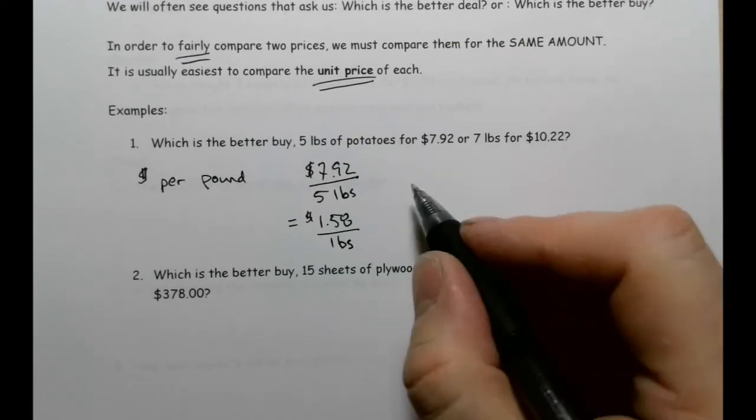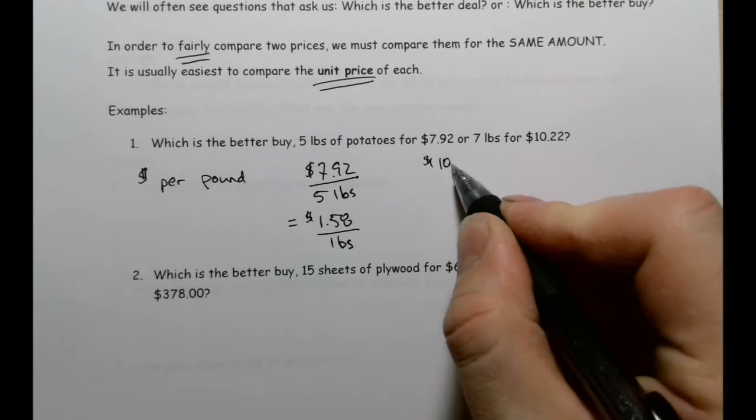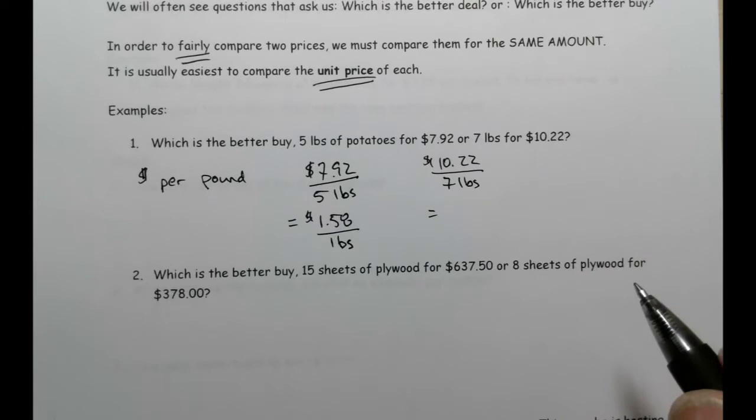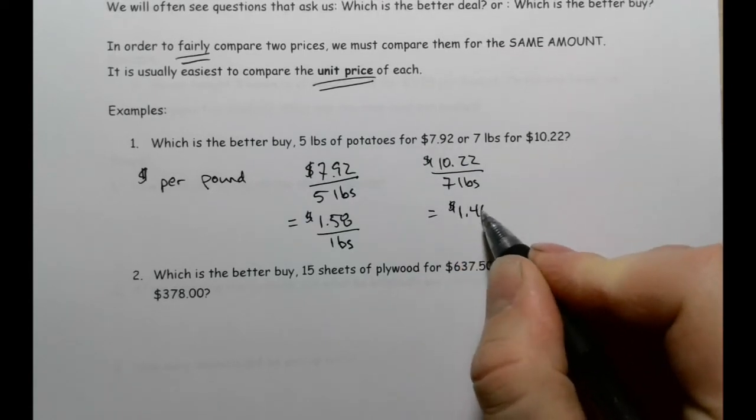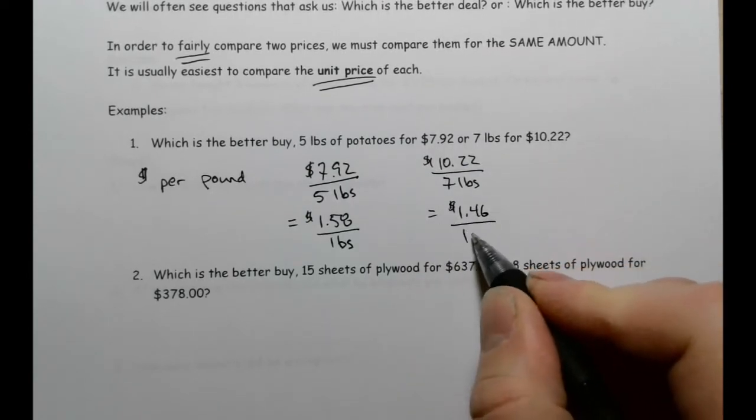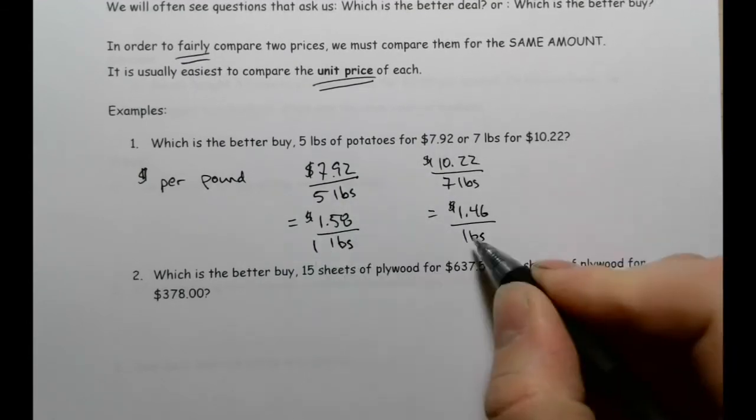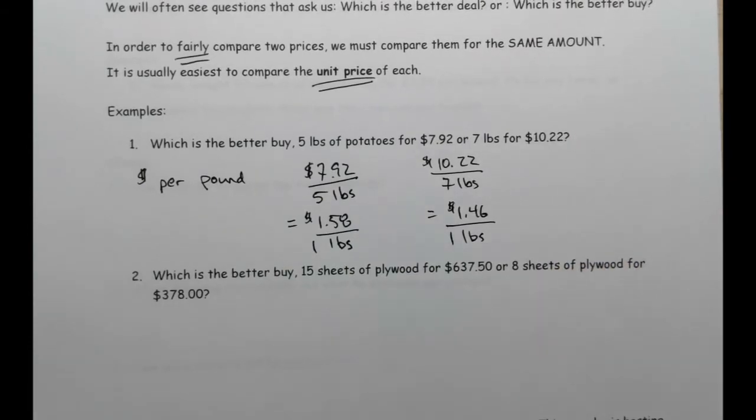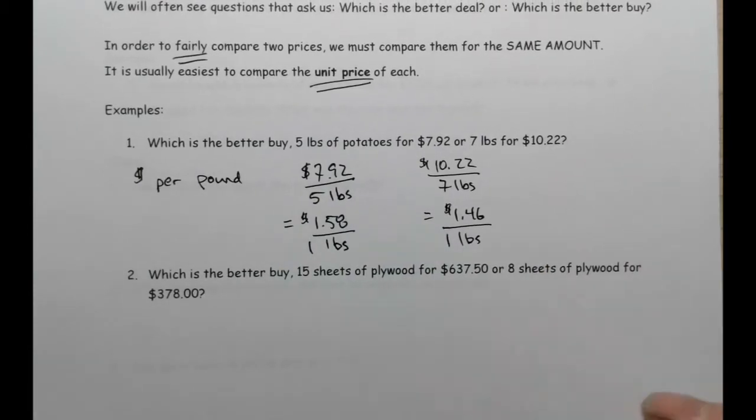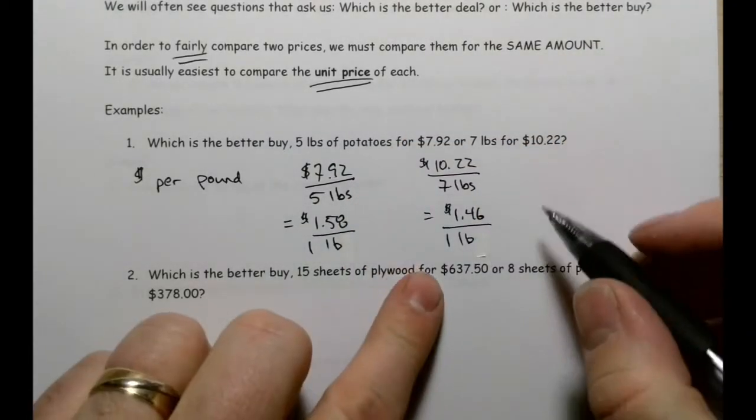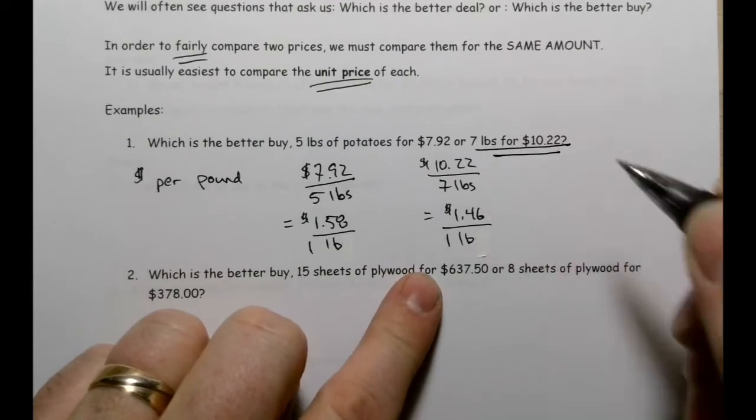Over here I'm going to have $10.22 per seven pounds. And again, I'm just going to take $10.22 divided by seven, and I'm going to get $1.46 per pound. So clearly this one here is the better deal. Not by a ton, but it is the better deal.